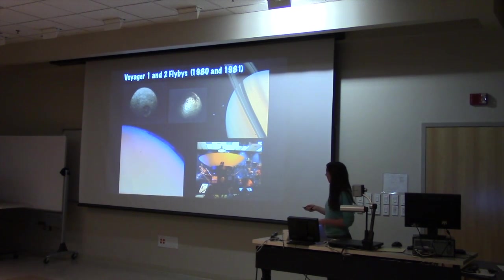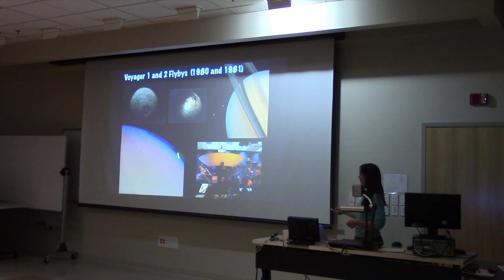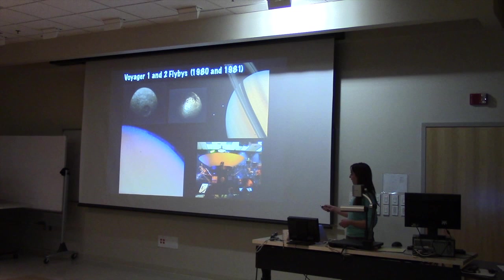Shortly after Pioneer, there's Voyager 1 and Voyager 2 flybys in 1980 and 1981. These are some images from those two flybys. You can see the image quality is much better. This is a replica of the Voyager spacecraft that is at JPL, that's the Jet Propulsion Laboratory in Pasadena, California.